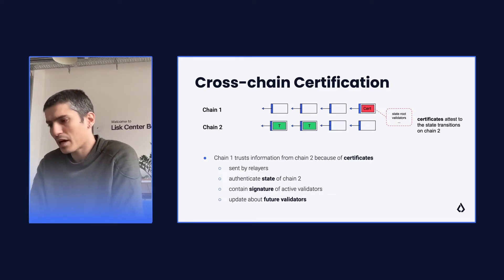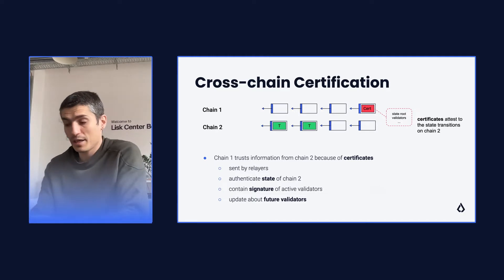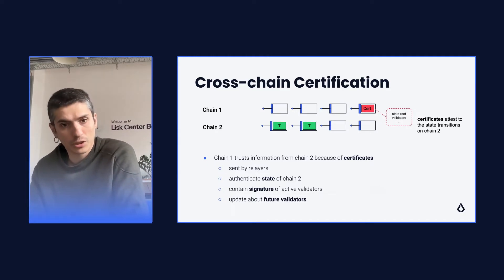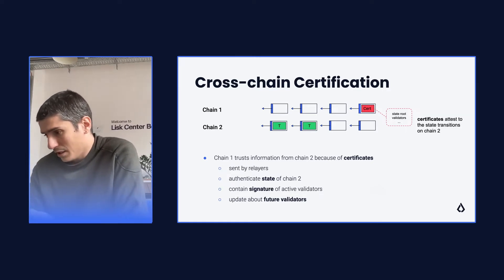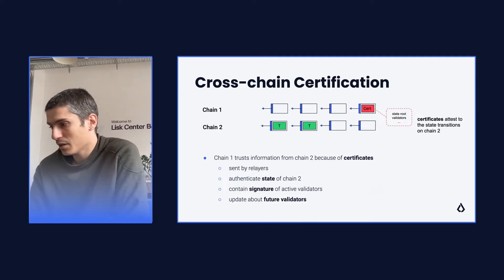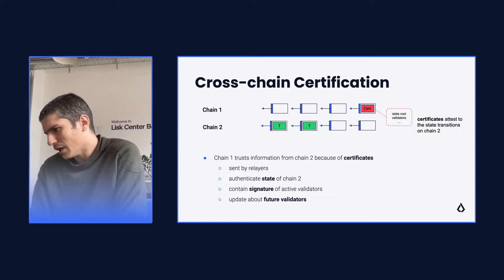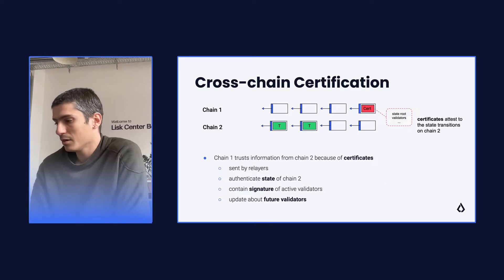Let's focus now on cross-chain certification, which is the way in which chains exchange information with each other in this independent chain architecture. On this slide I have two chains, chain 1 and chain 2. In general, chain 1 will trust information from chain 2 because of cross-chain certificates. These cross-chain certificates are data structures containing information about chain 2, signed by validators of chain 2 and submitted on chain 1.